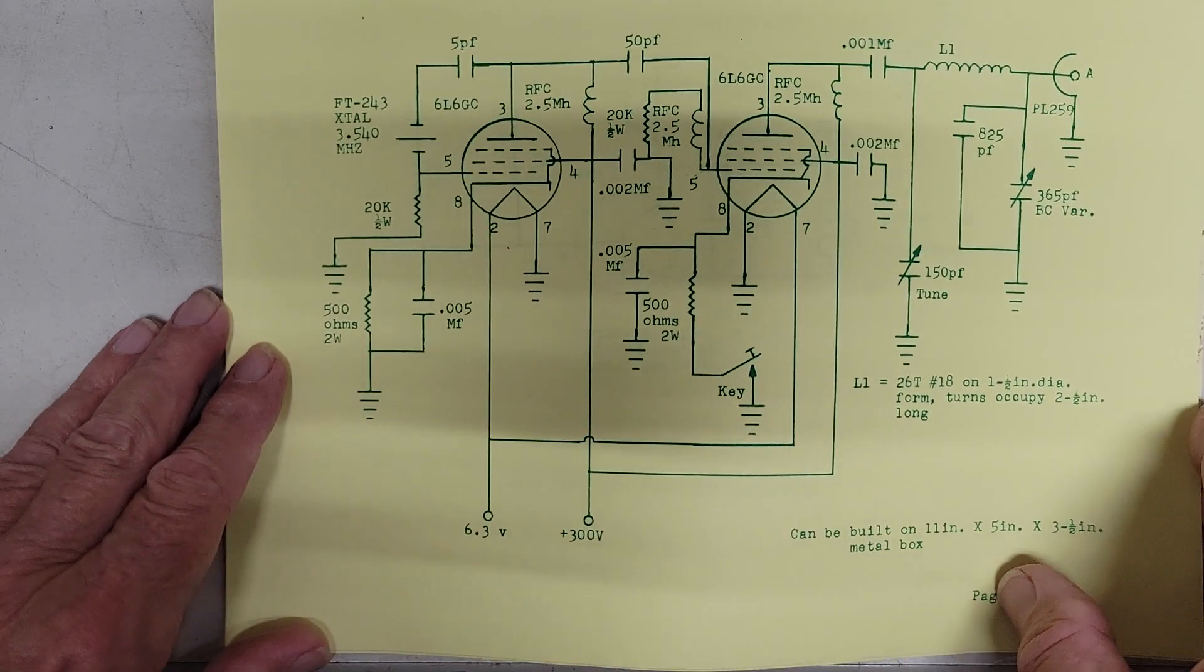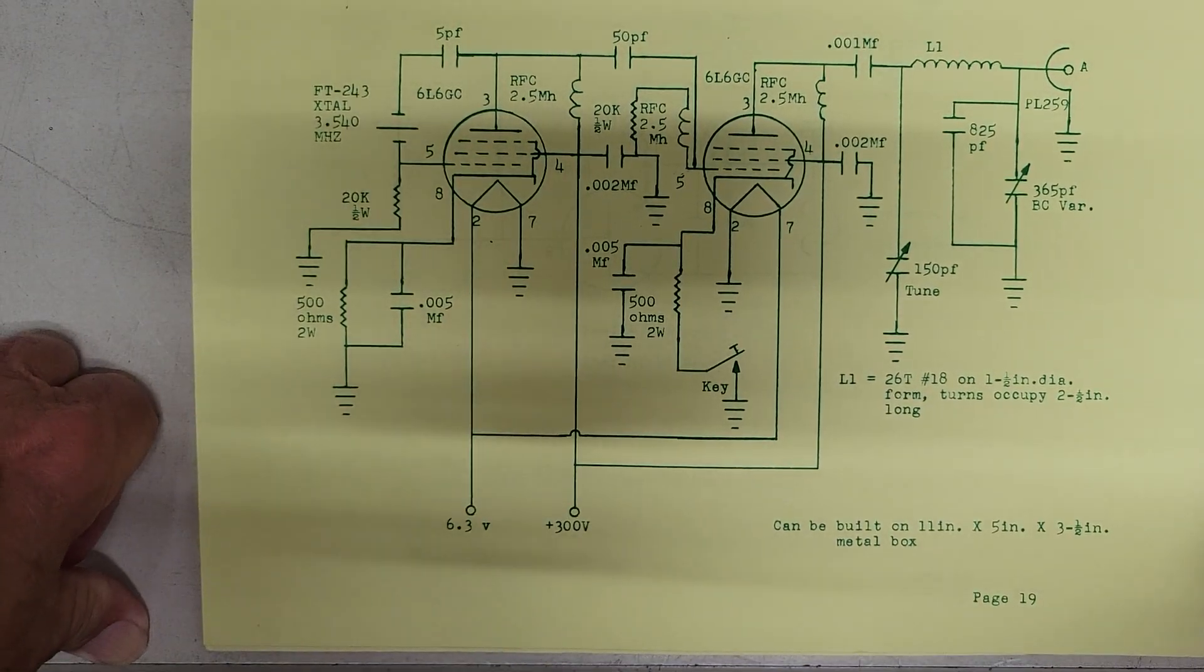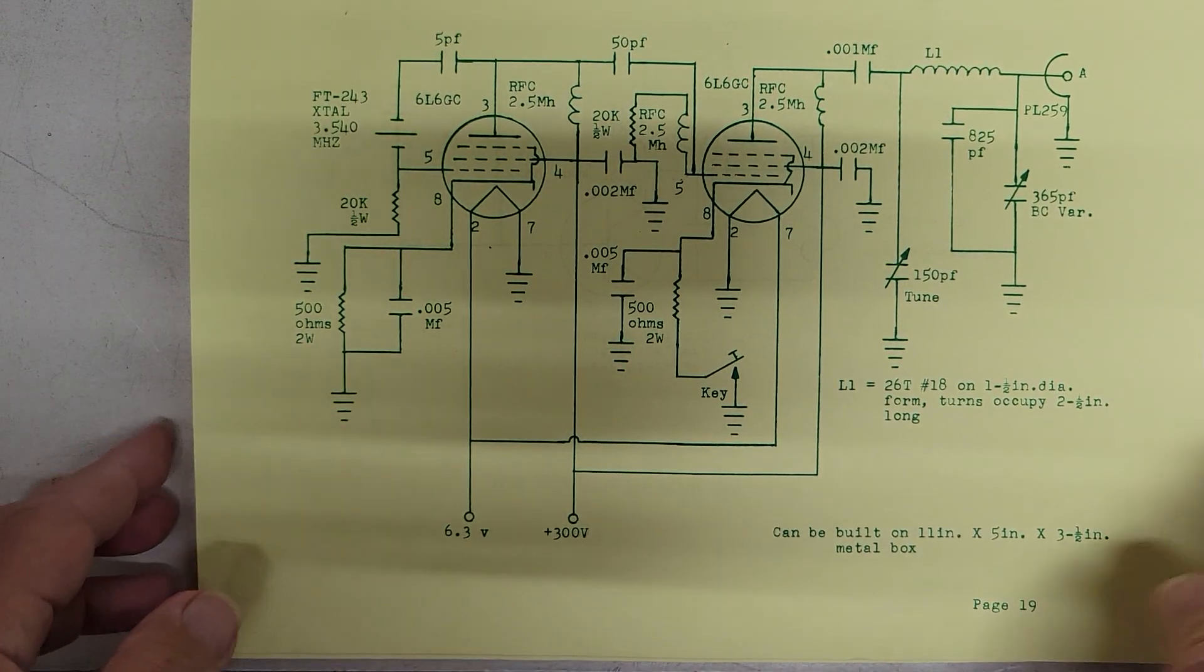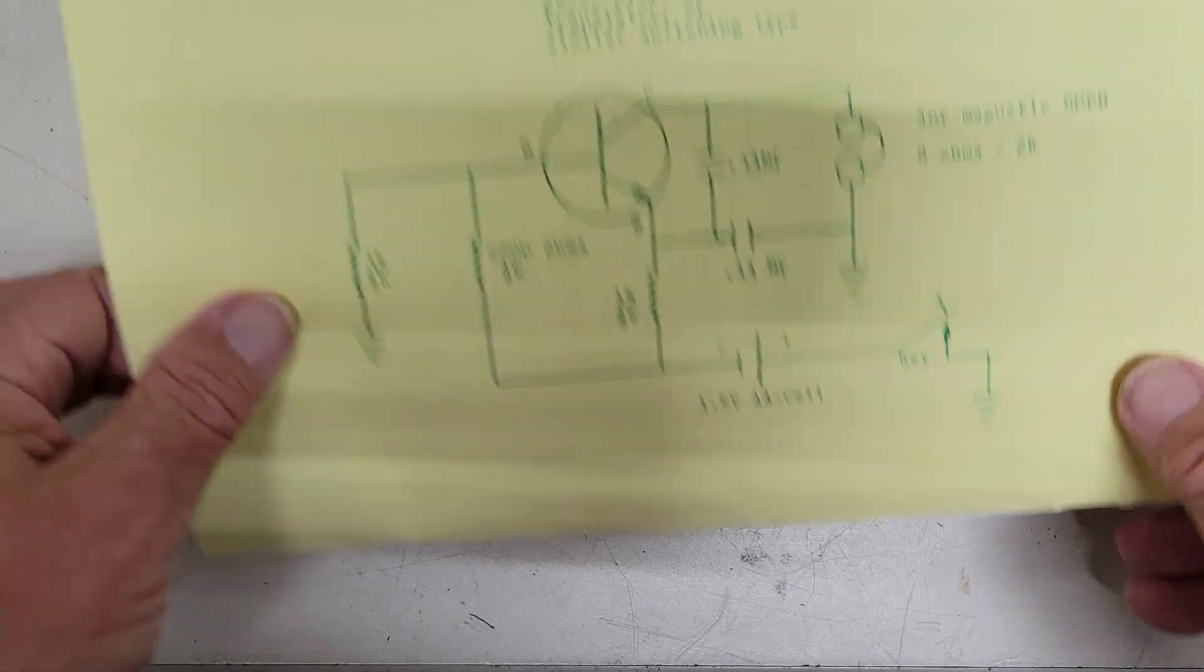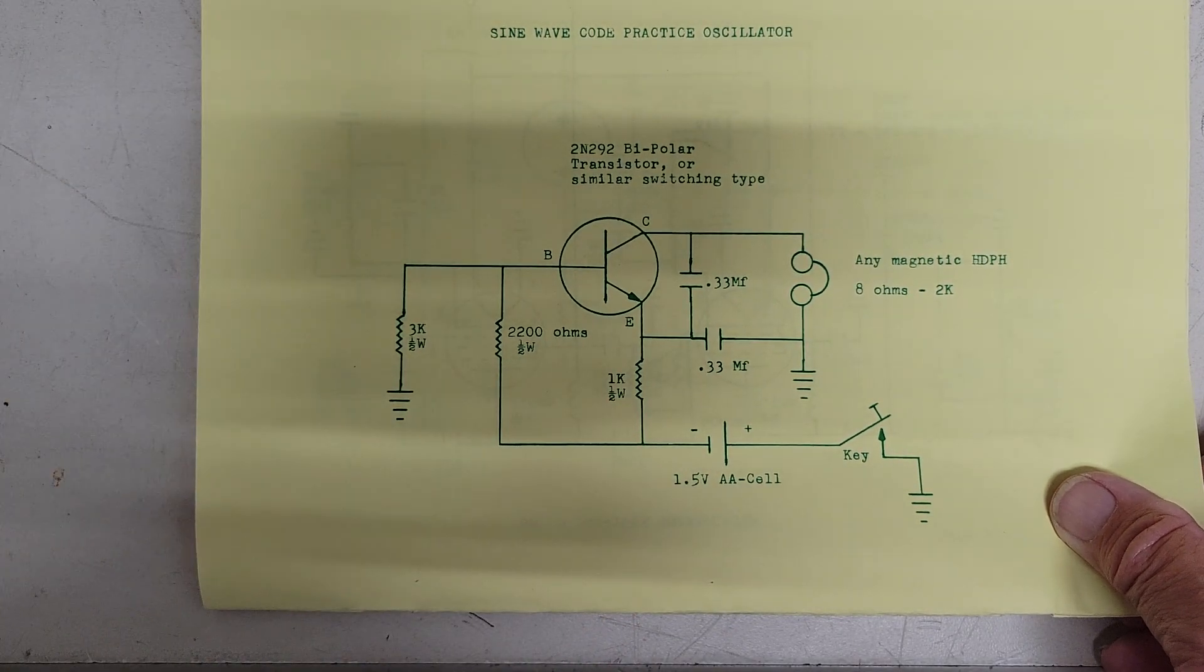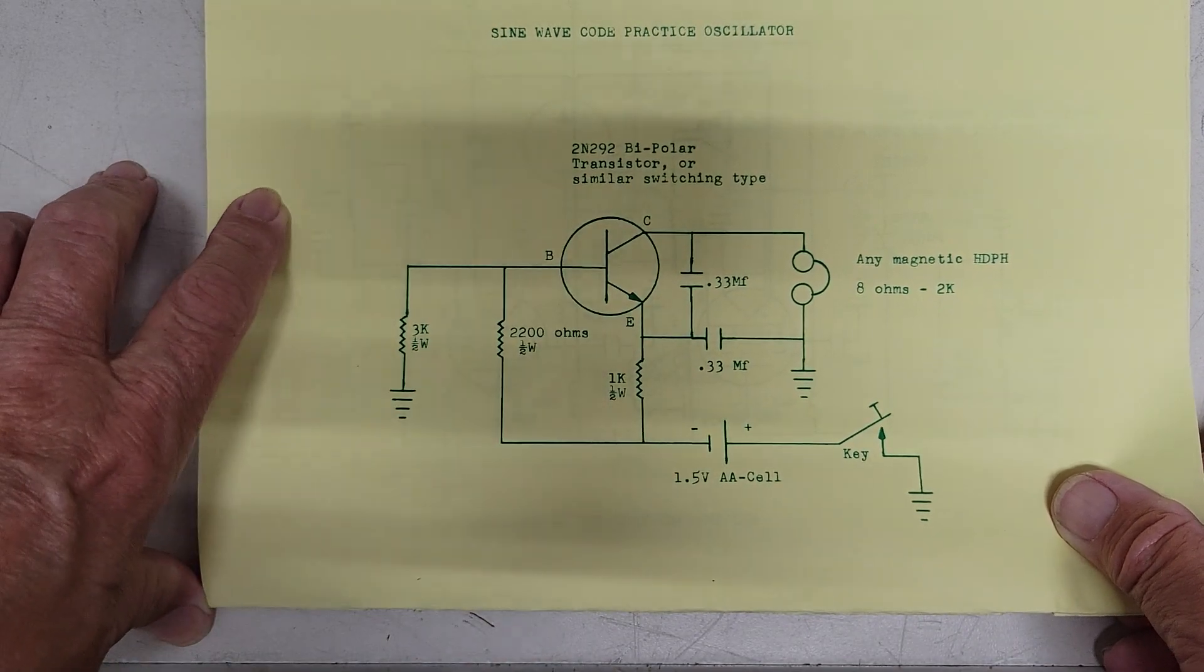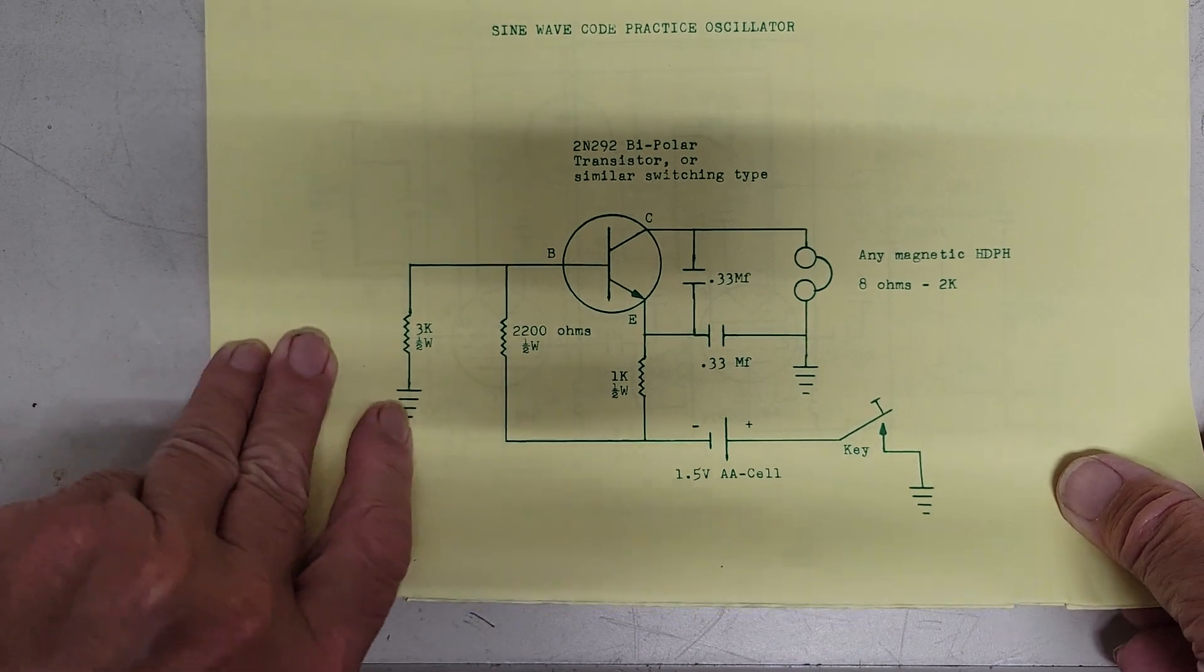Here is his two tube. Now I've heard him use this on the air quite a bit. I think it's the one he uses. 6L6s. And I think this is the final code practice oscillator using a 2N292. Probably about any little bipolar NPN transistor would work using a AA cell battery.